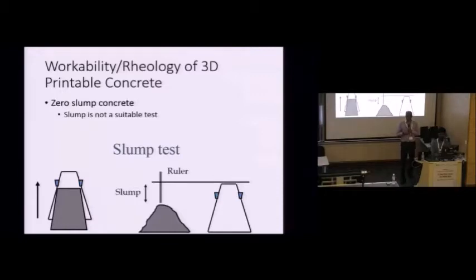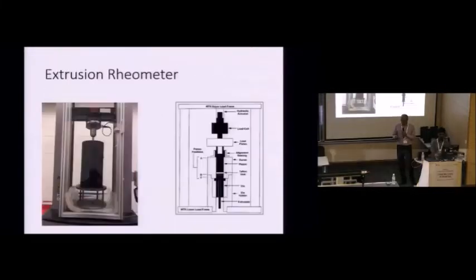Now, in terms of workability and rheology, in this 3D printing, we are dealing with zero slump concrete. So, we might have three different types of concrete. They're all zero slump concrete. To differentiate them, you can't use slump test, because they're all going to be the same result.